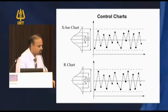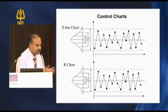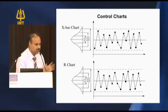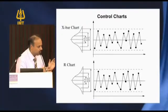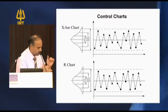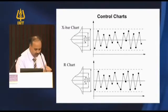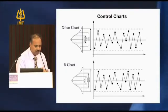Moving on to control charts — there are two types: the x-bar chart and the R chart. This chart demonstrates various standard deviation levels. With plus or minus one sigma, the coverage is shown.